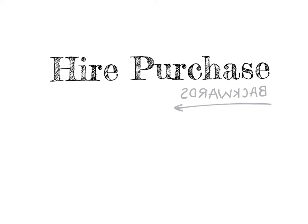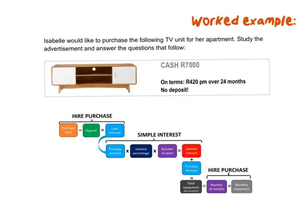Now that you can do hire purchase forwards, let's look at hire purchase backwards. Isabel would like to purchase the following TV unit for apartments. In the diagram it shows what the options are: she can either pay cash at 7,000 Rand, or she can pay it off at 420 Rand per month over 24 months, with no deposit required.